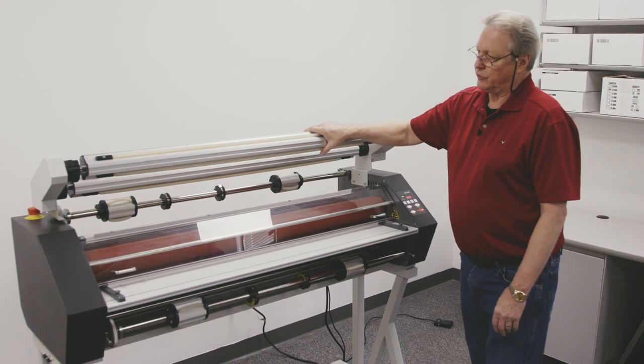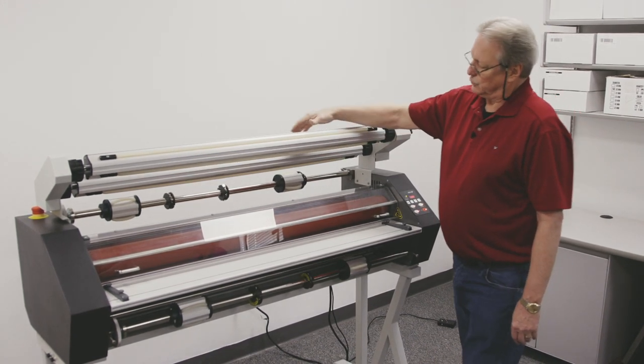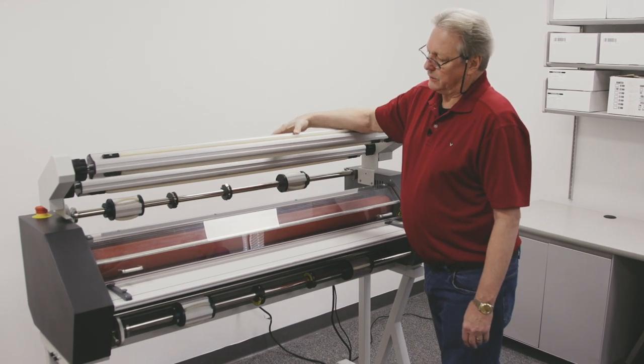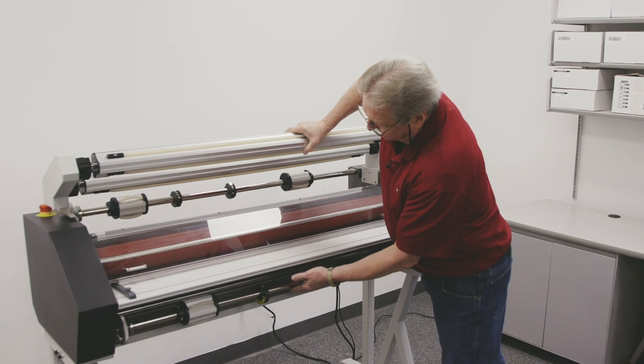Today I'm going to show you how to do some decaling. We'll put a PSA overlaminate on the top and we're going to put a mount adhesive on the bottom.